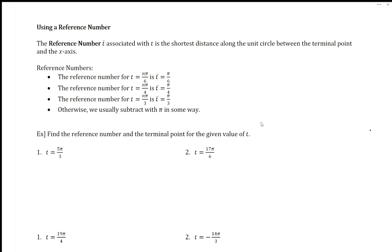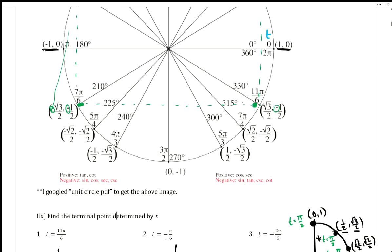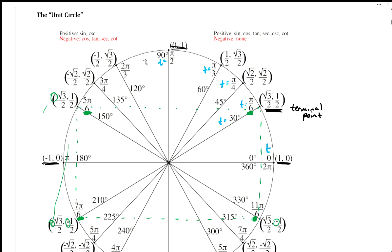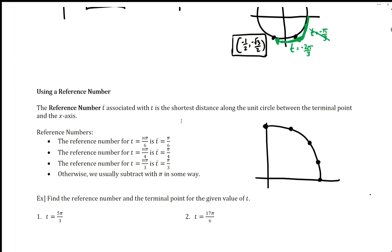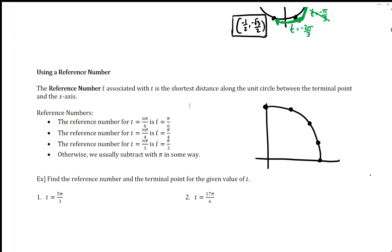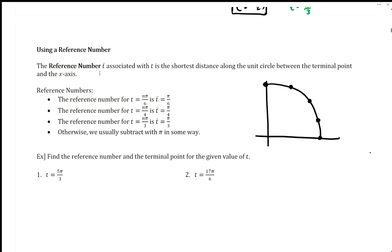Hi everyone and welcome to our video on using a reference number to help us with finding terminal points on the unit circle. A reference number is meant to use our first quadrant to help us with the unit circle. In our last video we introduced the unit circle, so I would say google that, print it out, maybe make flashcards to get this well known. But we can also use some other techniques to help us along the way, and reference numbers is one of them.